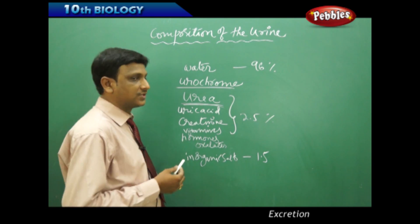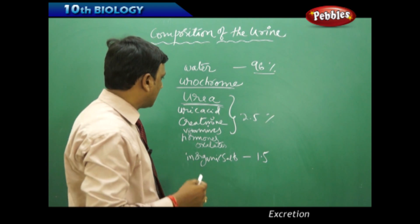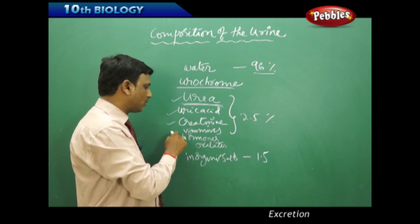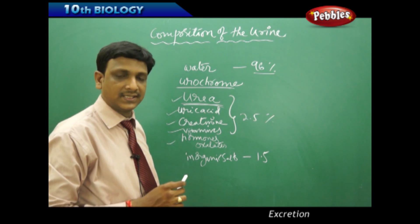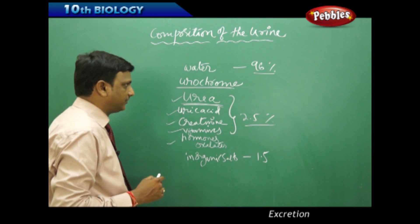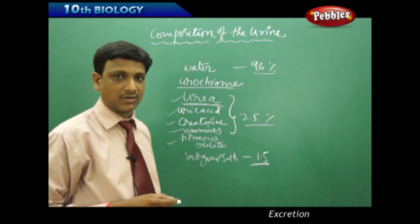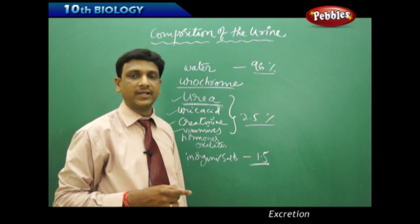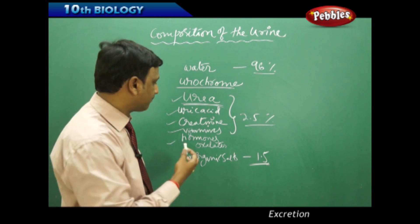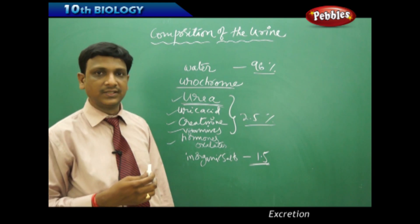If we look at the percentages of different components of urine: water 96%, organic compounds like urea, uric acid, creatinine, water-soluble vitamins, hormones and oxalates constitute 2.5% of the urine, and the remaining 1.5% is inorganic salts like calcium, iodine, chloride, sodium, potassium, magnesium. These ionic salts, inorganic salts are found in urine. This is the composition of the urine.